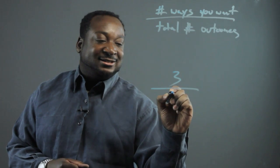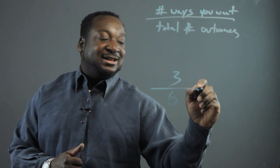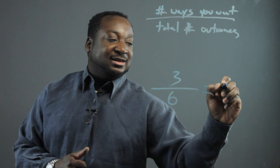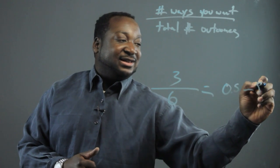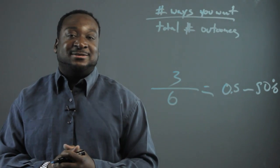And there are six outcomes when rolling the dice. That's giving you the answer 0.5 or 50%, when you move the decimal place over two times.